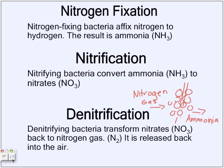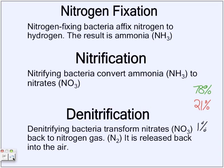In nitrification, nitrifying bacteria convert ammonia — which can be harmful to some organisms — into nitrates. Nitrates are really important because plants take them up. Then, nitrates from the soil and plants are turned back into nitrogen gas by the nitrifying bacteria, released back into the air, and the cycle continues.